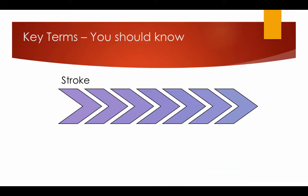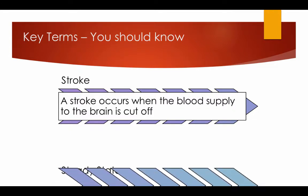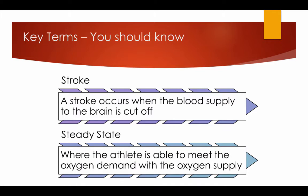Key terms you should know: A stroke occurs when the blood supply to the brain is cut off. Steady state is where the athlete is able to maintain the oxygen demand with the oxygen supply.